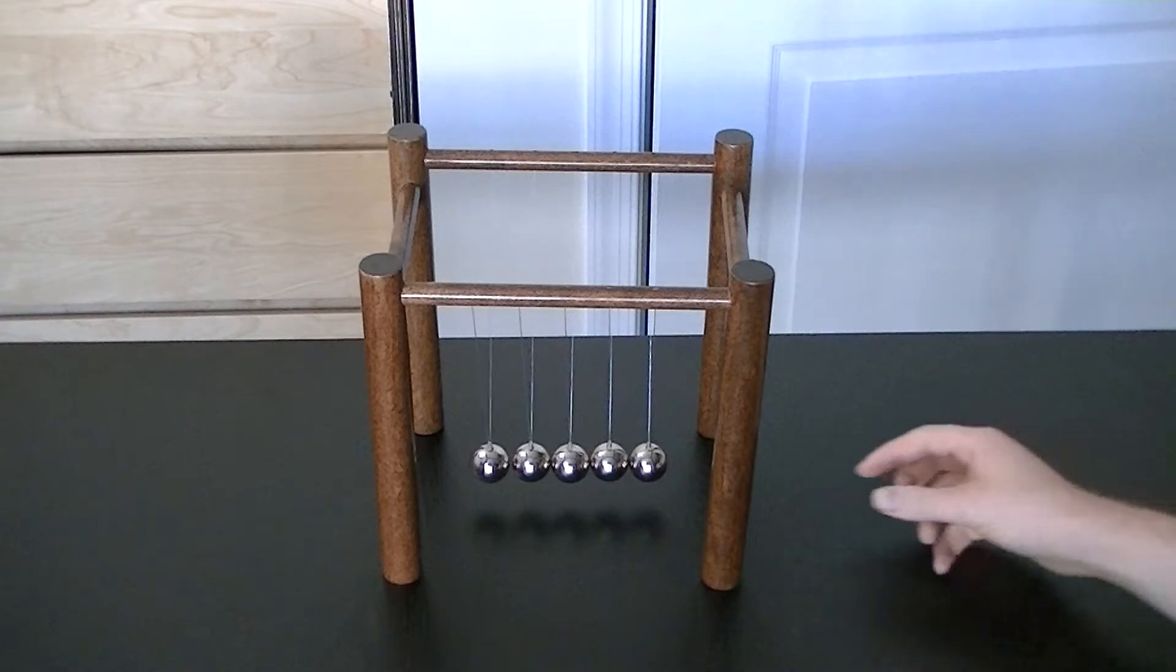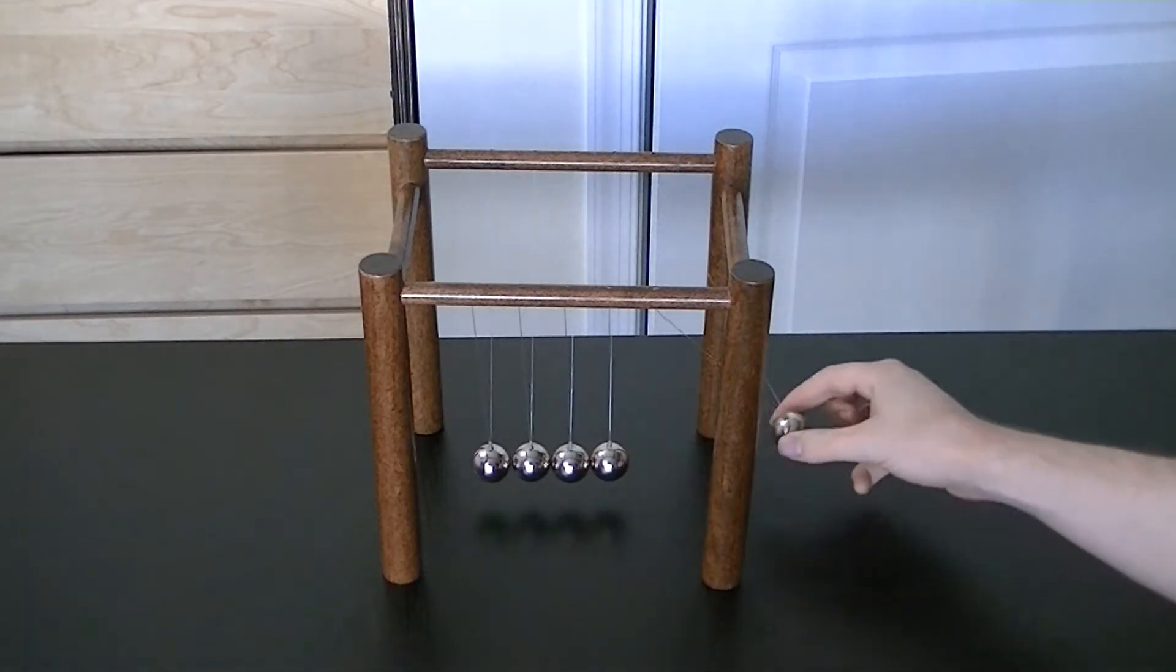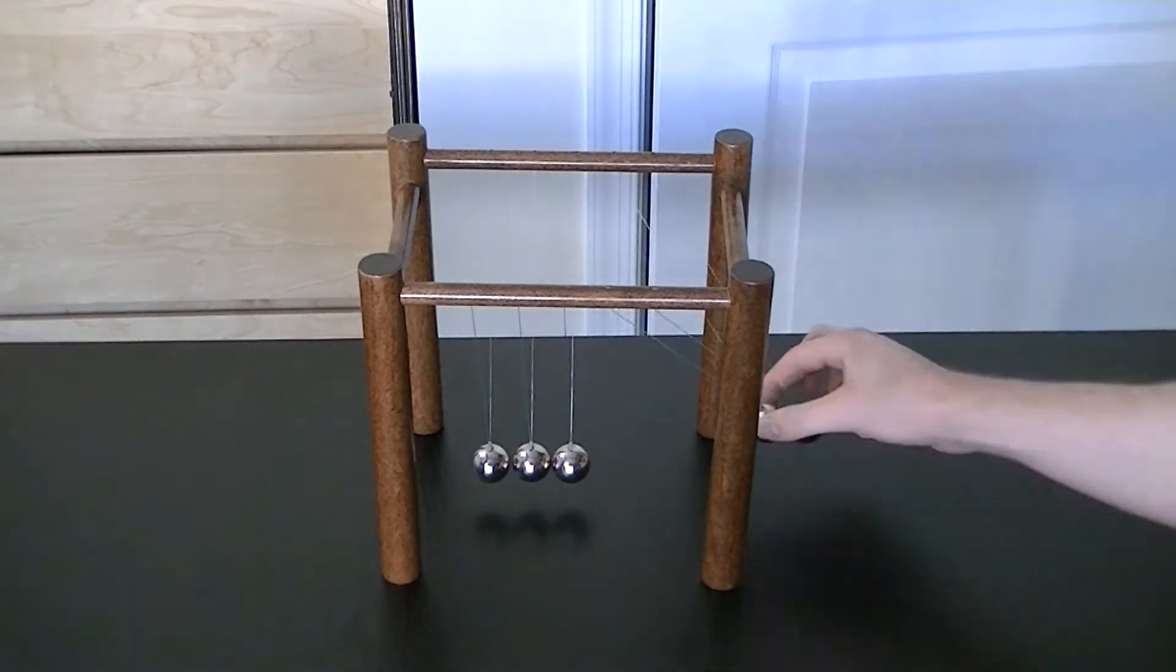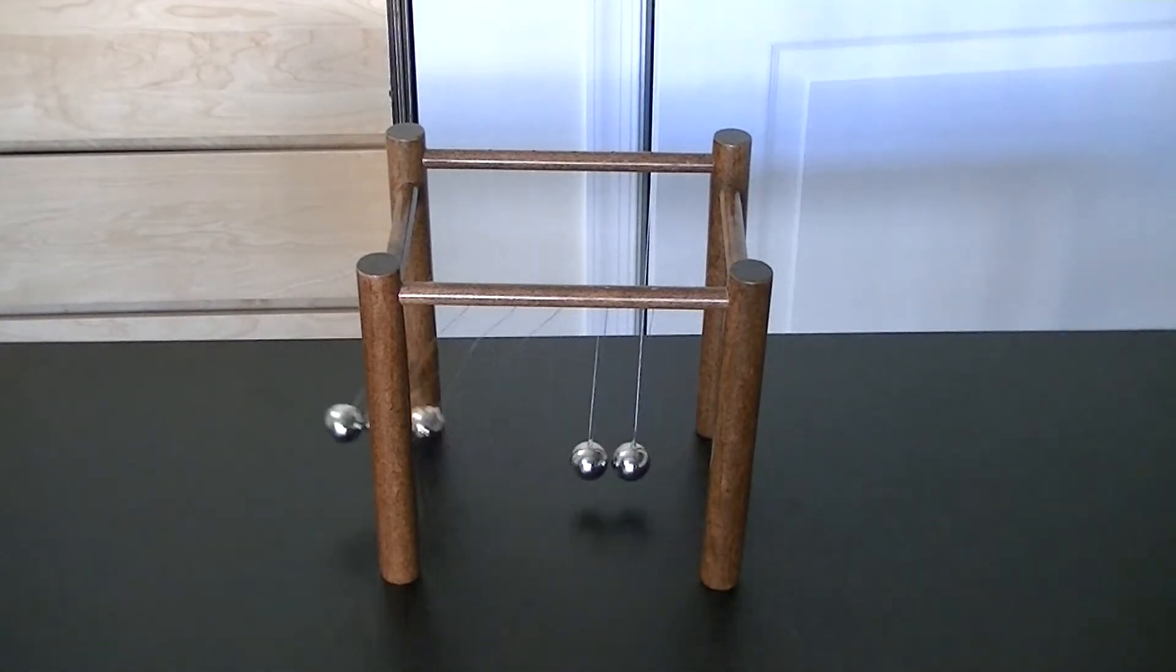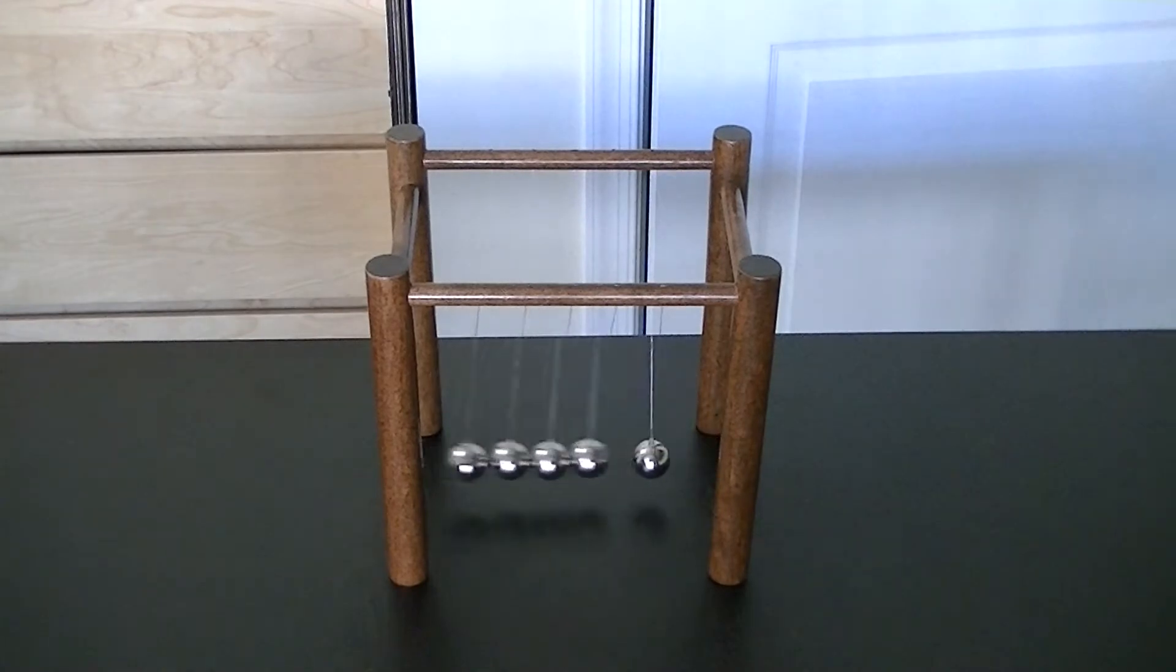That's why when I drop one ball in a Newton's cradle, one ball comes out. And when I release two balls, two balls come out. And when I release three balls, three balls come out. And it even works with four. Whatever momentum I put in, the same momentum has to come out.